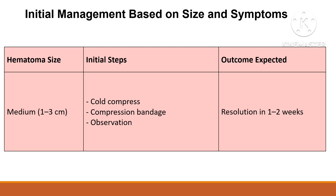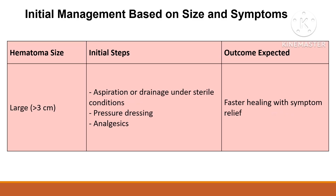Medium-sized hematomas measuring 1 to 3 cm may require additional measures such as a compression bandage or close observation, with resolution expected in 1 to 2 weeks. Large hematomas over 3 cm often require aspiration or drainage under sterile conditions, combined with pressure dressings and analgesics to relieve symptoms and promote healing.